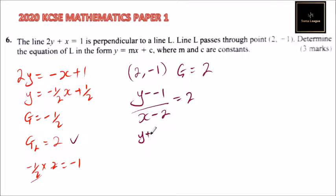So y + 1 equals, when you multiply, 2x - 4. You multiply by 2. Then take 1 to the other side, it becomes negative. So you have y = 2x - 4 - 1, which gives you y = 2x - 5.